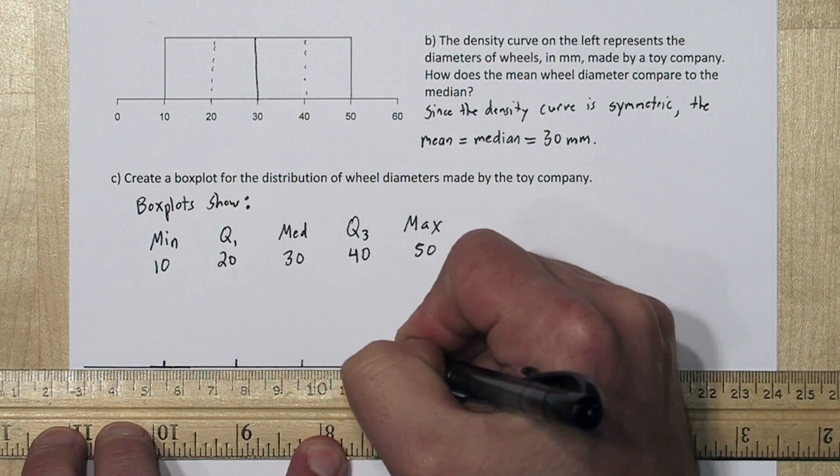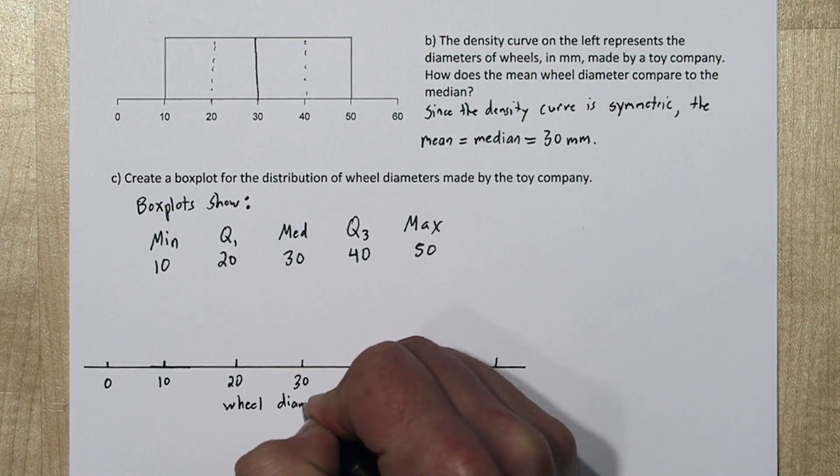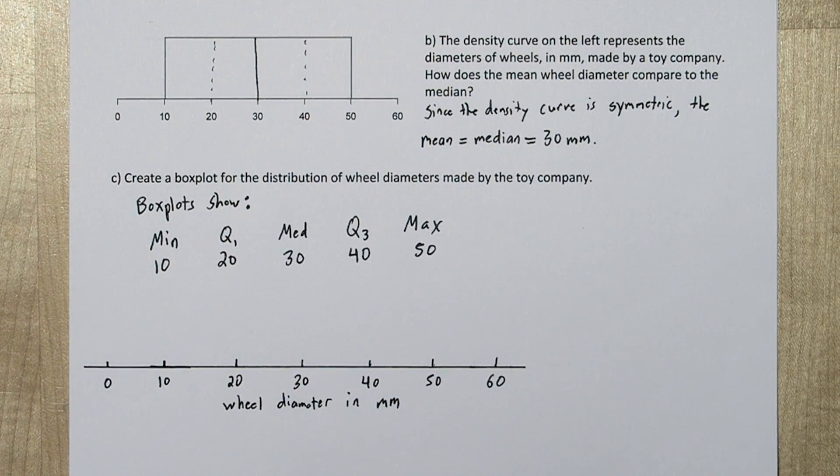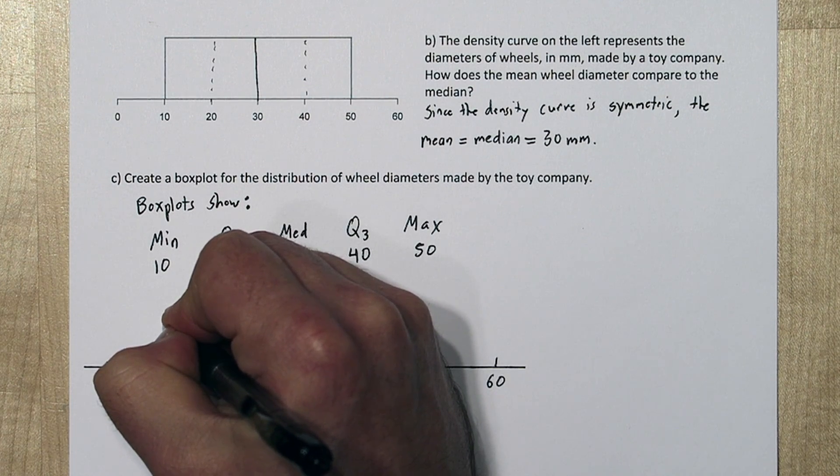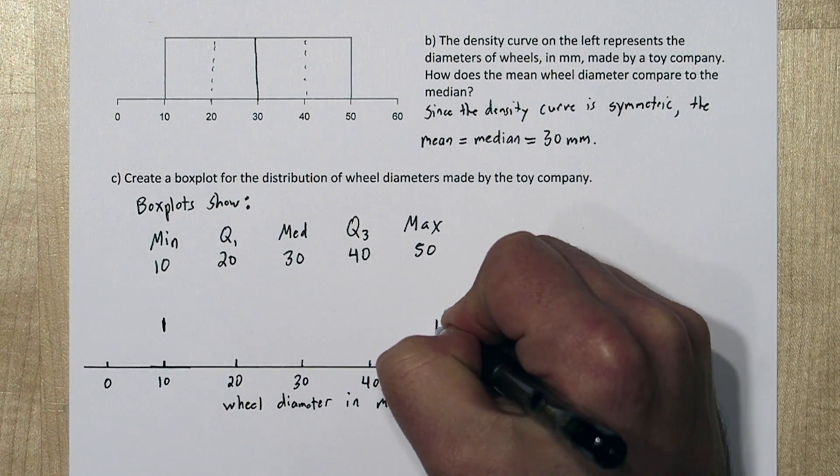So let's draw an axis and make our box plot. So on a box plot, our minimum and maximum are represented by tiny vertical lines.